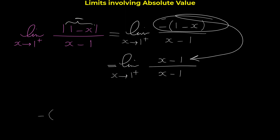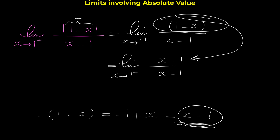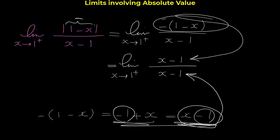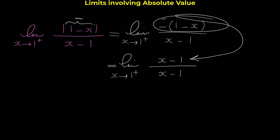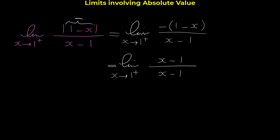We write the limit as -(1-x)/(x-1) as x approaches 1 from the right. Distributing the negative in the numerator gives -1+x = x-1. So numerator and denominator are both x-1, they cancel, and the limit equals 1.